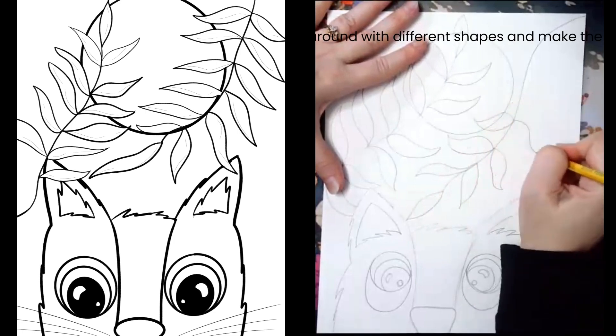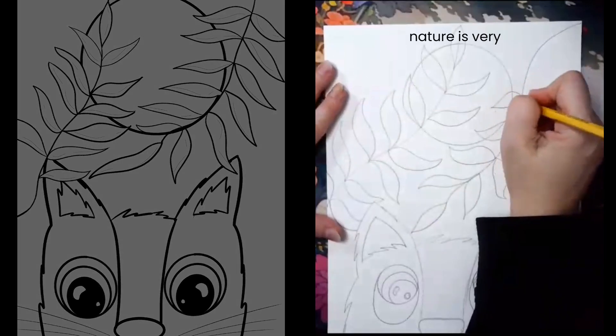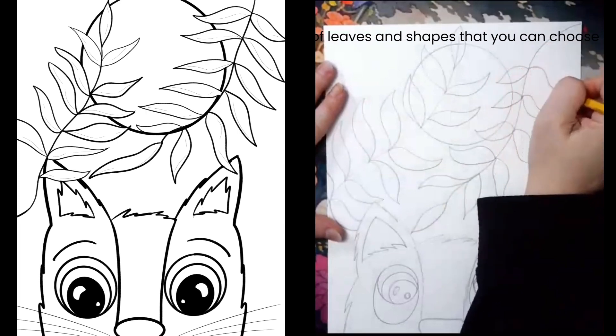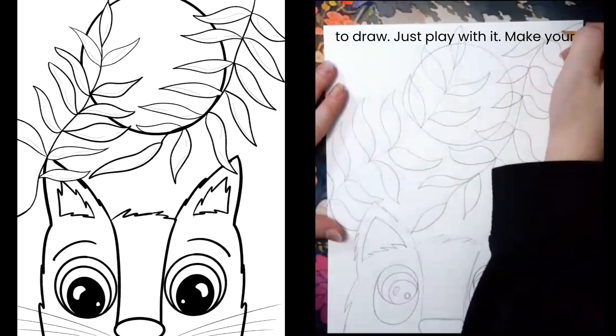But play around with different shapes and make the leaf shape that you like best because nature is very varied. There are so many different kinds of leaves and shapes that you can choose to draw. Just play with it. Make your favorite.